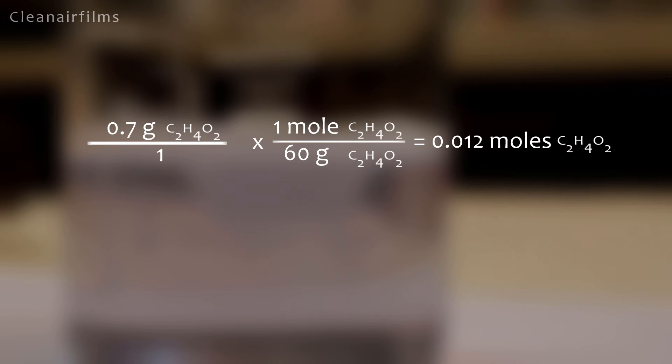Now that we know how many moles of acid we have we can find out how many moles of base we had. The reaction equation also says that one mole of base equals one mole of acid in this reaction. So we also have 0.012 moles of ammonia.